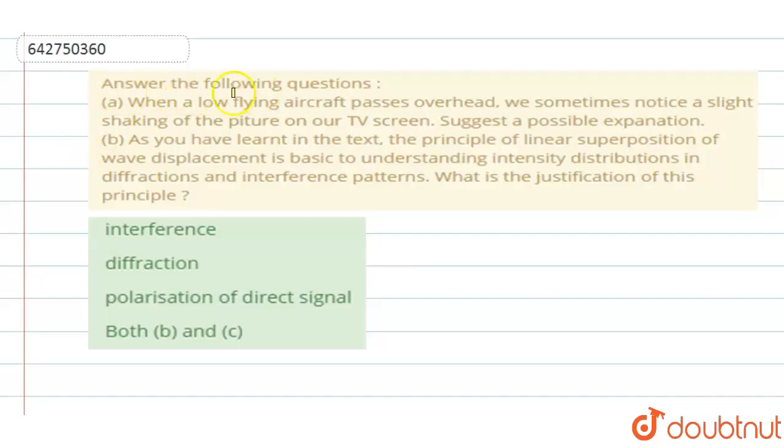To answer the following questions, you have a set of questions to answer here. The first question is: when a low flying aircraft passes overhead, we sometimes notice a slight shaking of the picture in the TV screen. So let's look at a possible explanation.